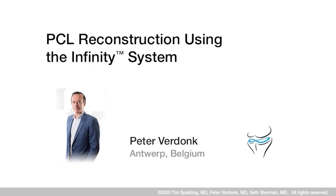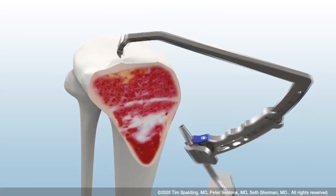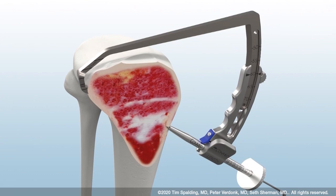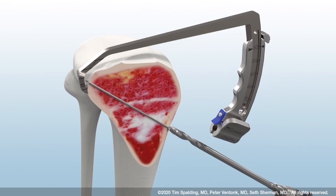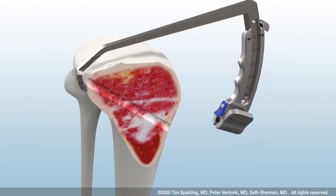My name is Peter Verdonk and I will introduce the PCL single-bundle technique using the specifically designed PCL tibial aimer. It allows you to identify the sweet spot and introduce the pin, while also protecting the soft tissues in the back using the broad shoulders of the aimer. Once the tunnel is drilled, you can introduce a loop which can then be picked up through the anteromedial or anterolateral portal.